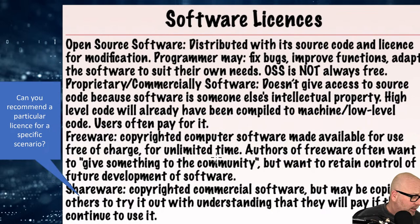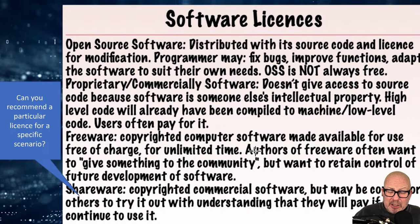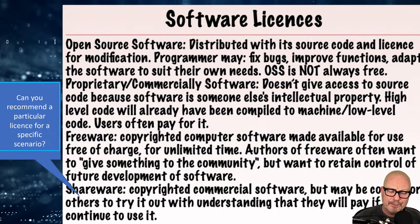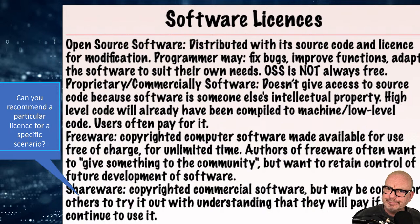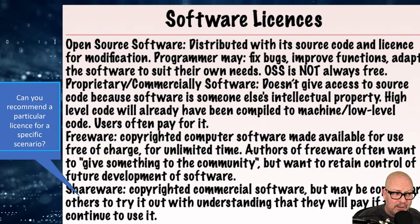They may well ask a question — they mention software licensing in the specification. For example, they might give you a scenario: Alicia has a software company and wants to sell pictures of her dog online. She's got no money — what software license would you recommend? You'd probably say that having proprietary software made would be very expensive, so you'd recommend open source software because there's a big community of people who will help, she can learn and build her business, and if something goes wrong it's not the end of the world.